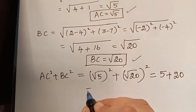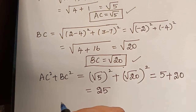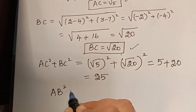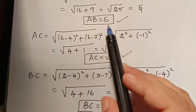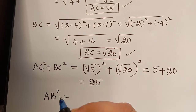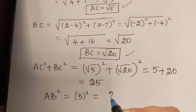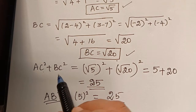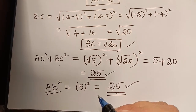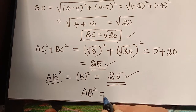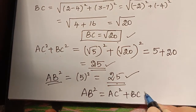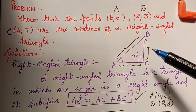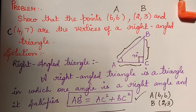On the left-hand side, AB² = 5² = 25. Therefore we have obtained AB² = 25 and AC² + BC² = 25. Hence we have proved that AB² = AC² + BC², and therefore the given three points form the vertices of a right-angled triangle. Hope you have understood this problem. Thank you.